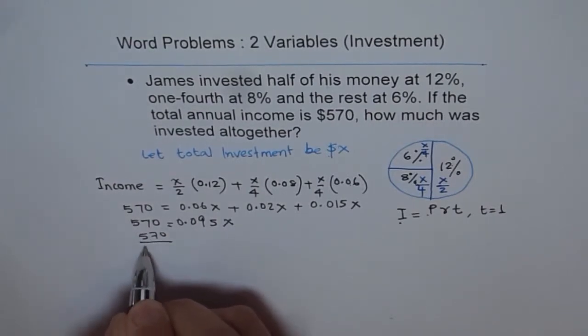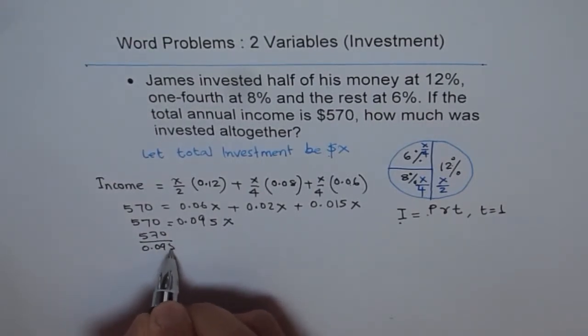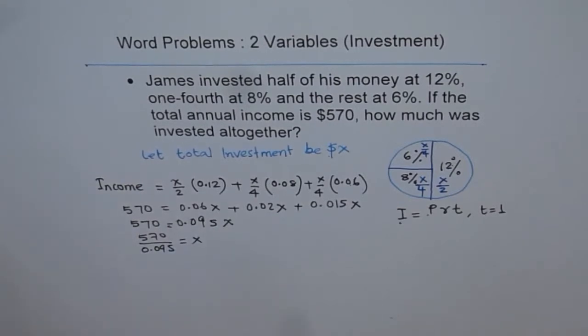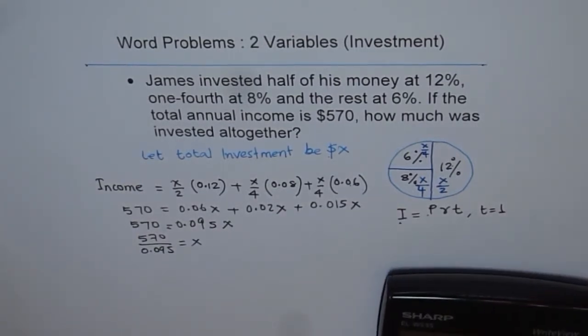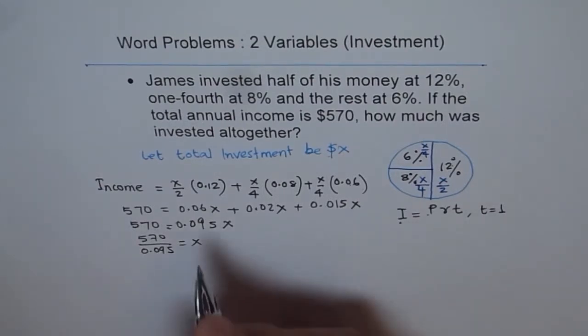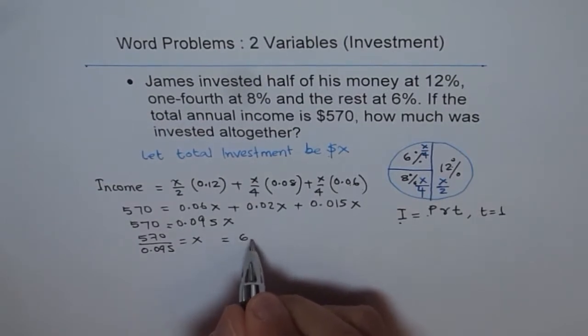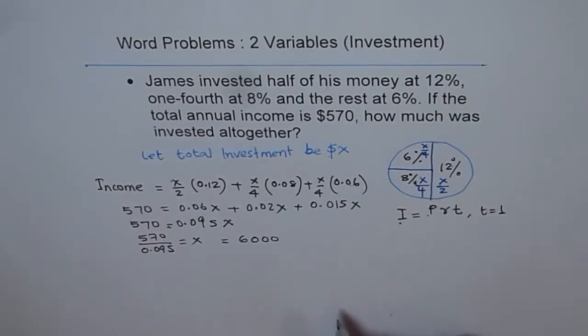570 divided by 0.095 is equal to X. So we use calculator now and figure out what is the answer. 570 divided by 0.095, it gives us $6,000.